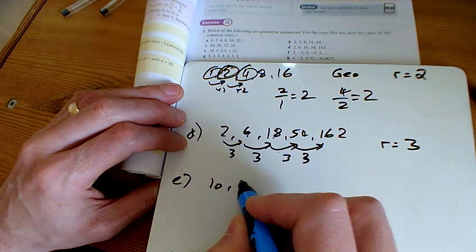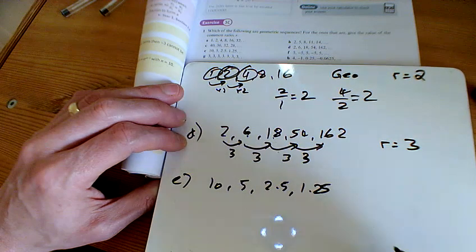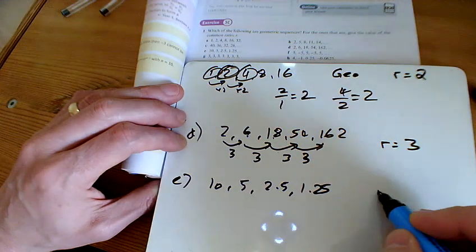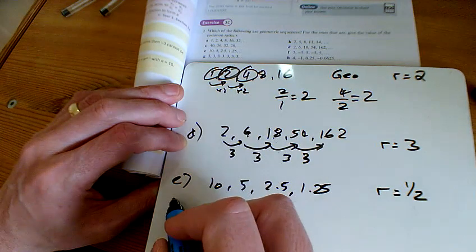Now E, they're getting smaller every time, aren't they? In fact, can you see they're halving every time? And so this one is a geometric progression with R being a half, times them by a half each time.